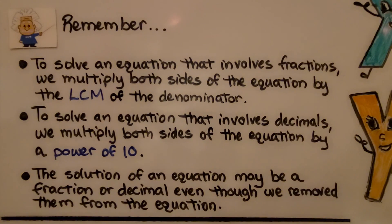Remember, to solve an equation that involves fractions, we multiply both sides of the equation by the least common multiple of the denominators. We did that in 7.2a. And to solve an equation that involves decimals, we multiply both sides of the equation by a power of 10, whatever power of 10 would remove those decimals. We did that in 7.2b. And the solution of an equation may be a fraction or decimal, even though we removed them from the equation.